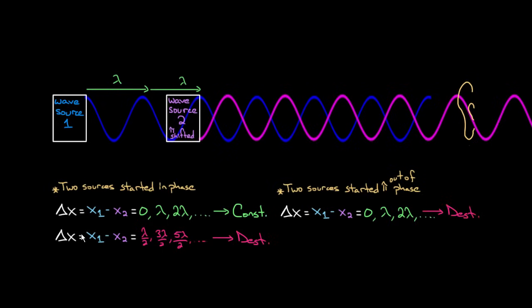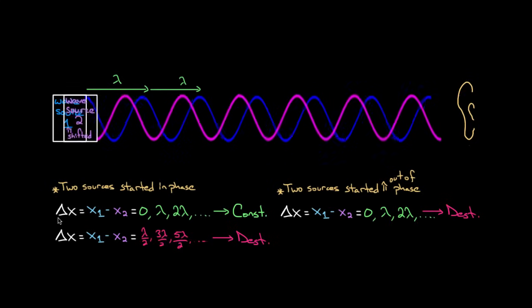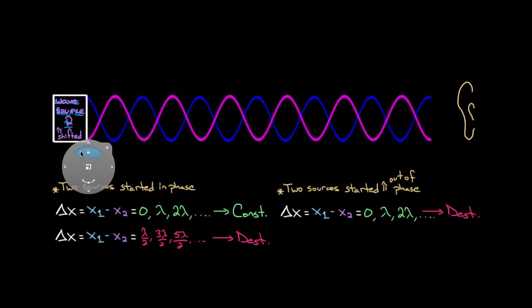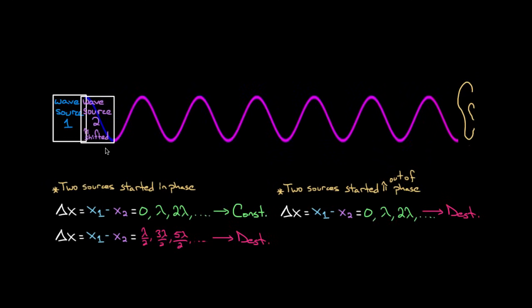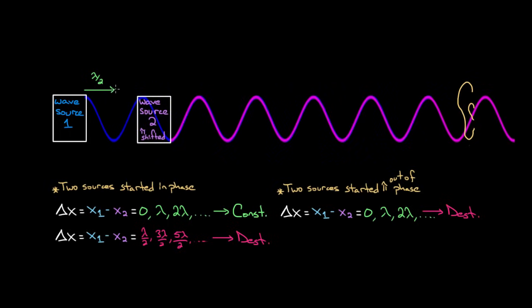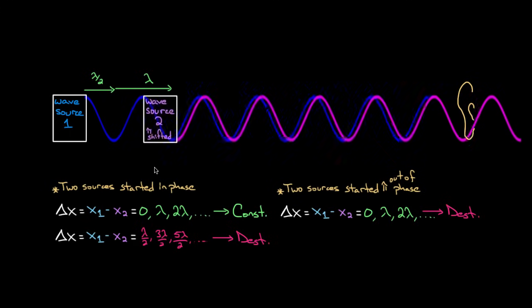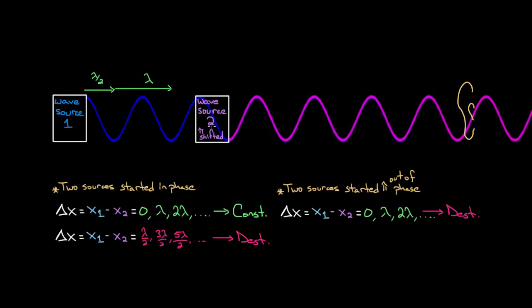You can probably guess now: what do half-integer wavelength path length differences give us for pi-shifted sources? Moving the pi-shifted source forward one half of a wavelength gives constructive interference. Moving it so wave source one travels one and a half wavelengths further — that's three-halves wavelengths — also gives constructive. All these half-integer wavelength path length differences, instead of giving destructive, are giving constructive now, because one of the wave sources was pi-shifted compared to the other.